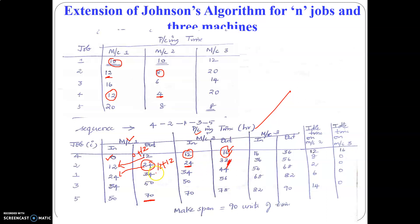But the next job is available only at the end of the 34th minute, so the maximum of these two is 34. Similarly, we do for the remaining jobs. At the end of the 78th minute, machine 2 is getting free.